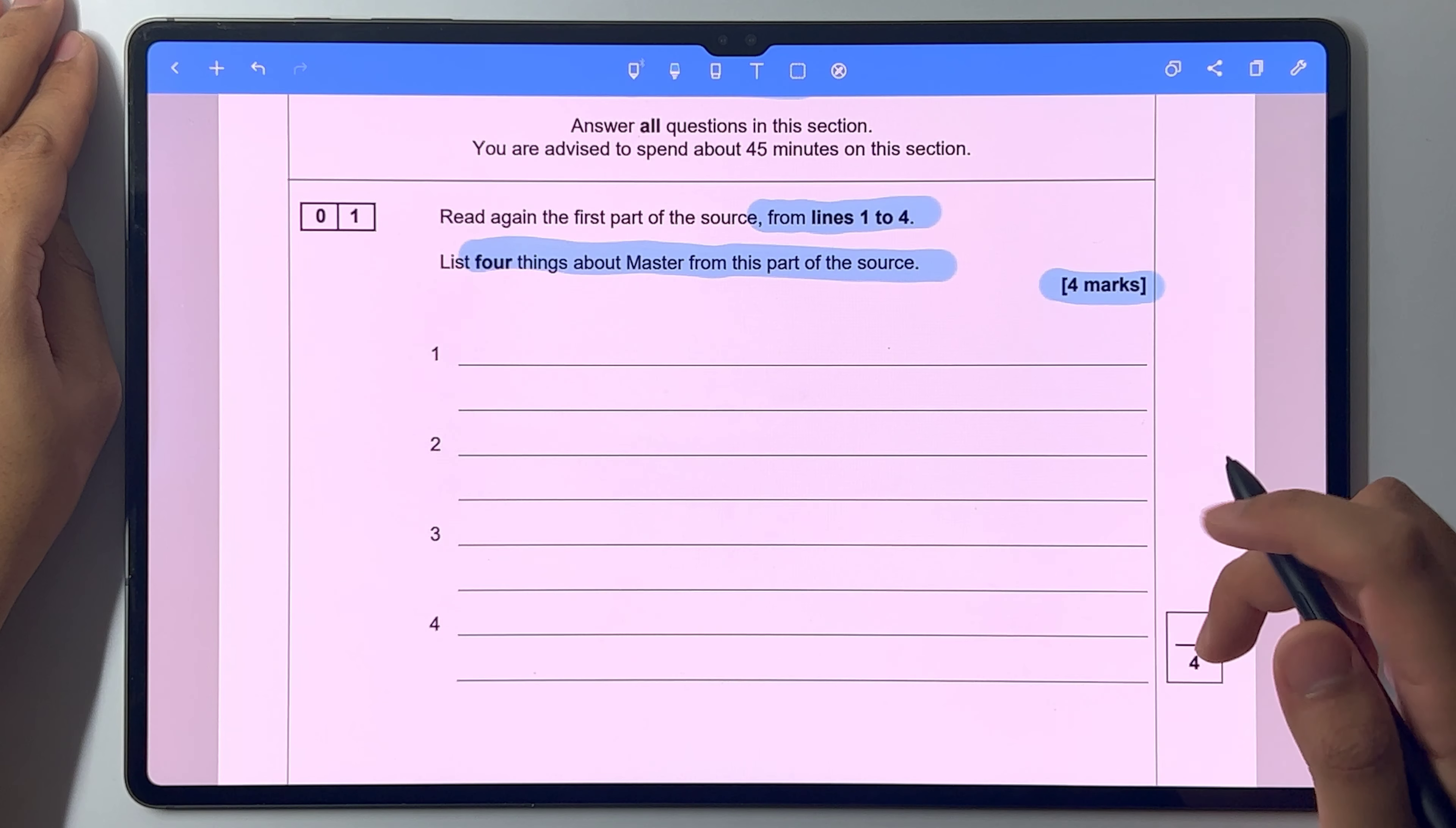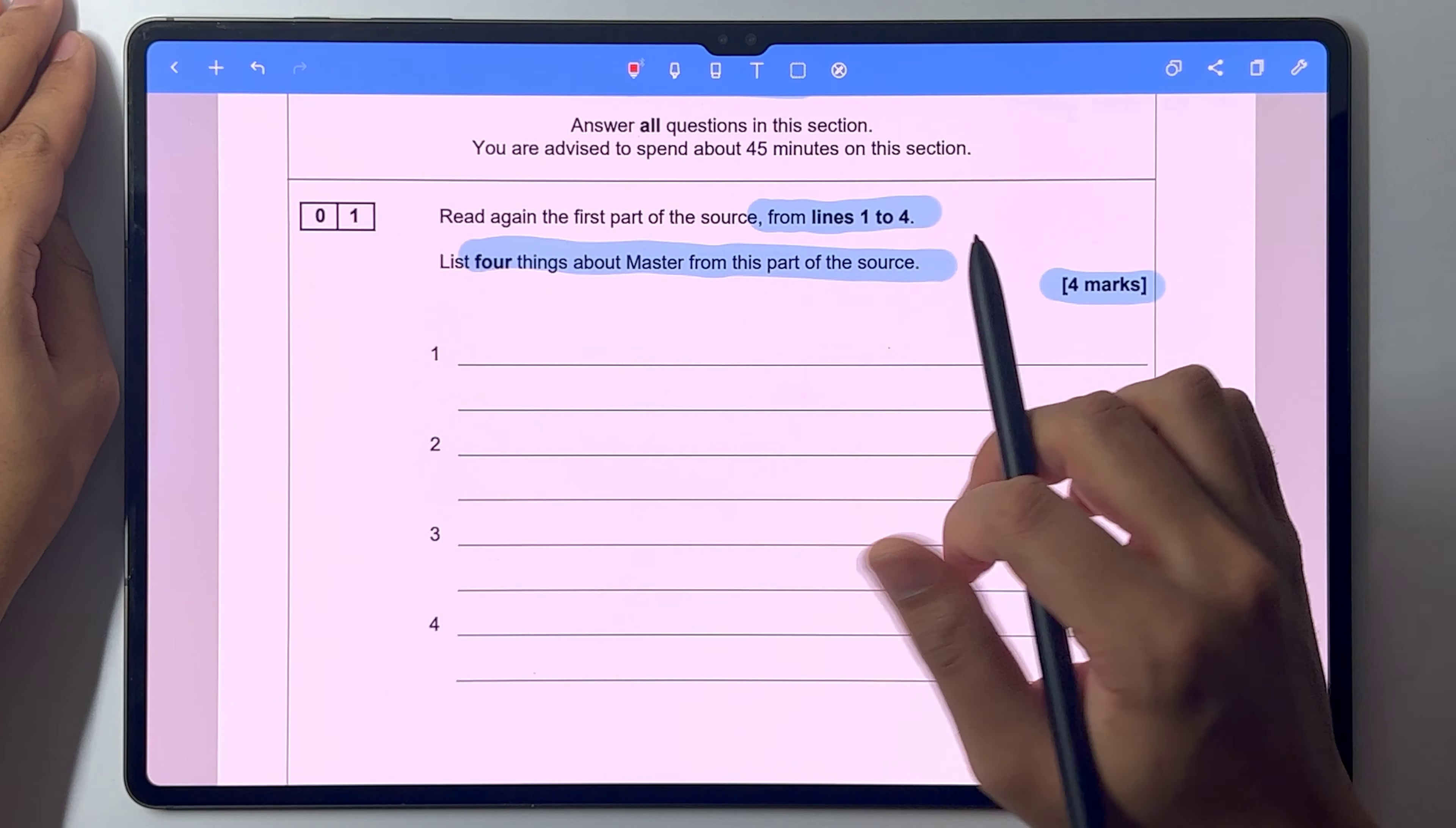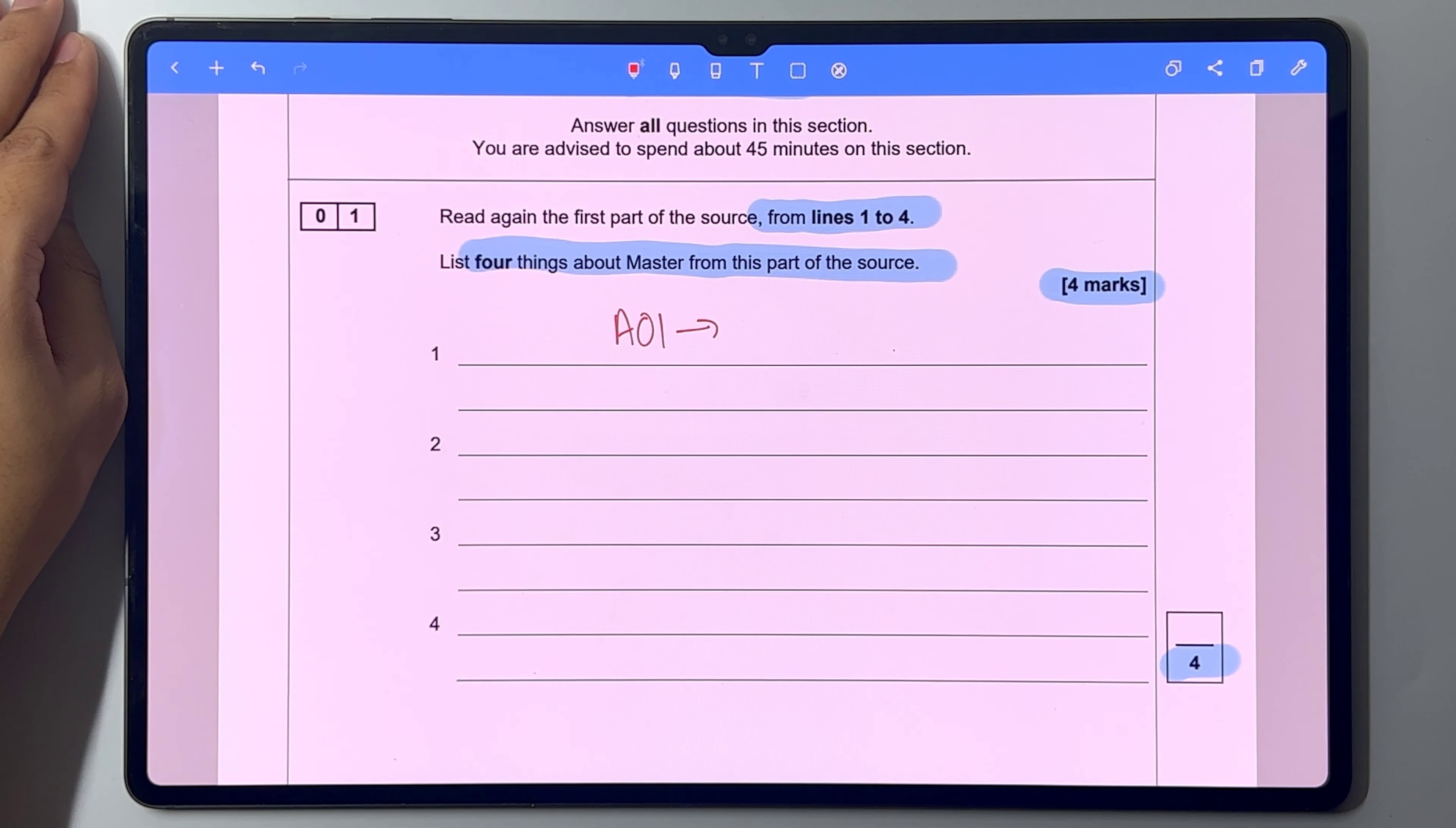So if you look at the question, you get a mark out of four. And what this question is assessing is assessment objective one. So what is assessment objective one?